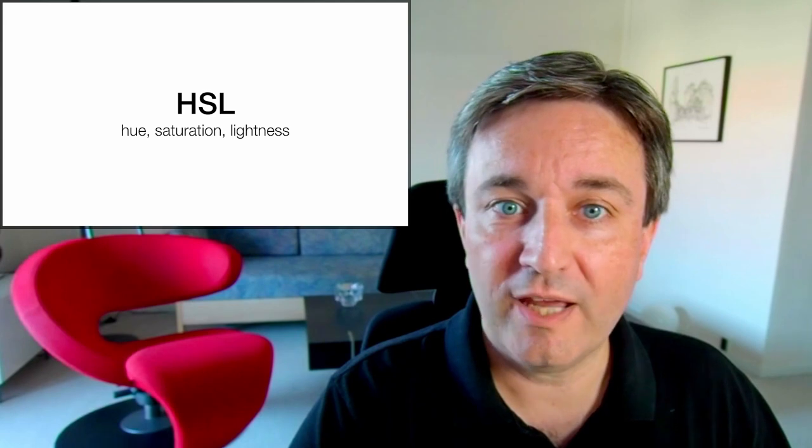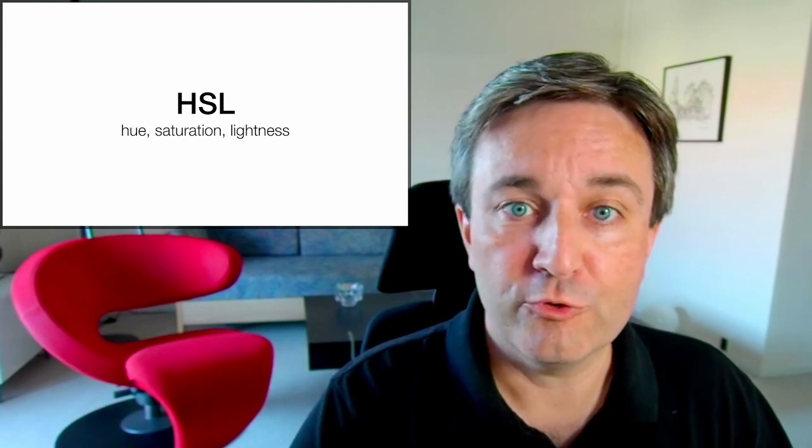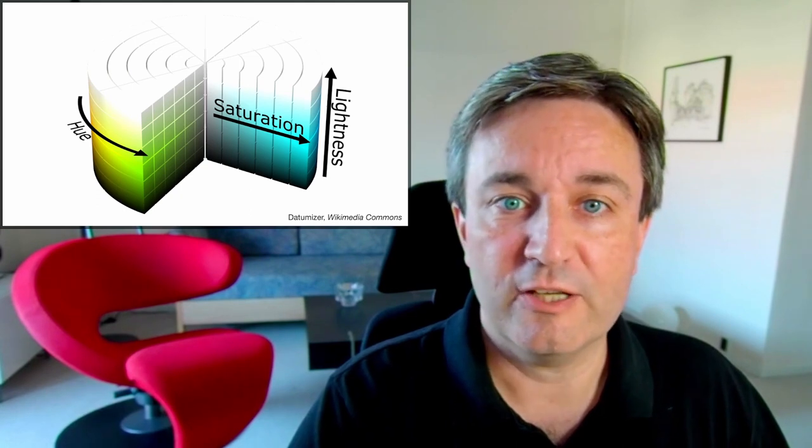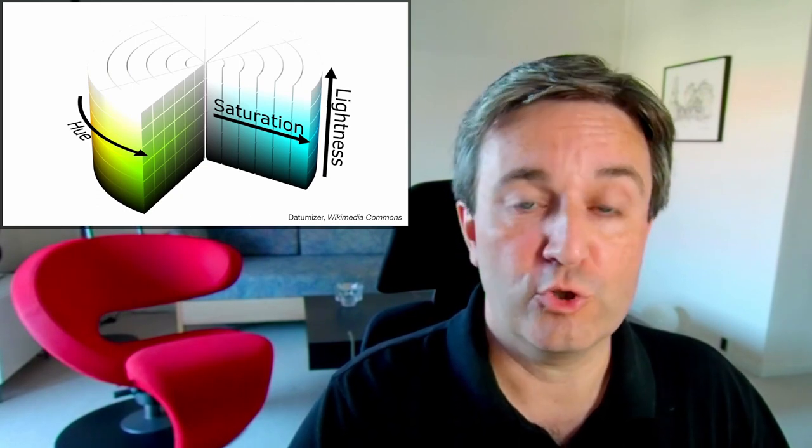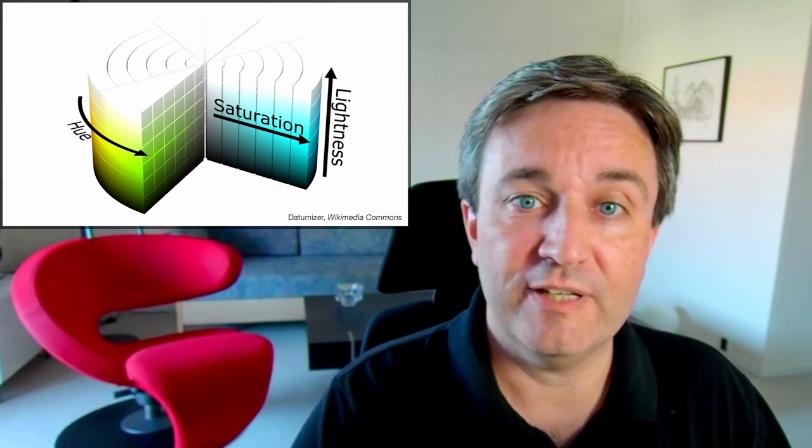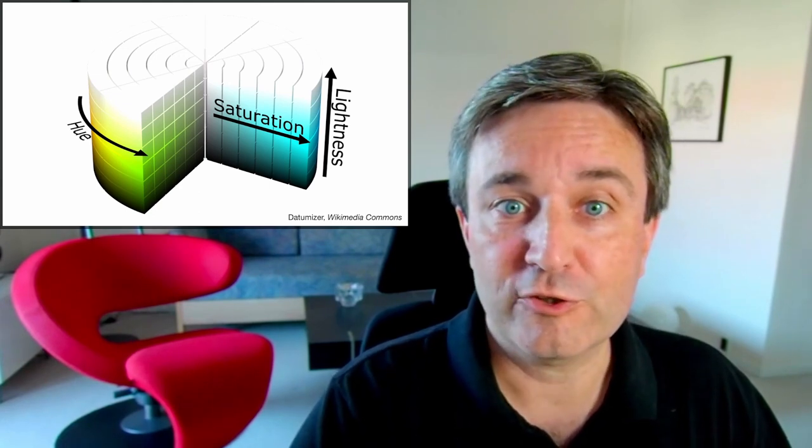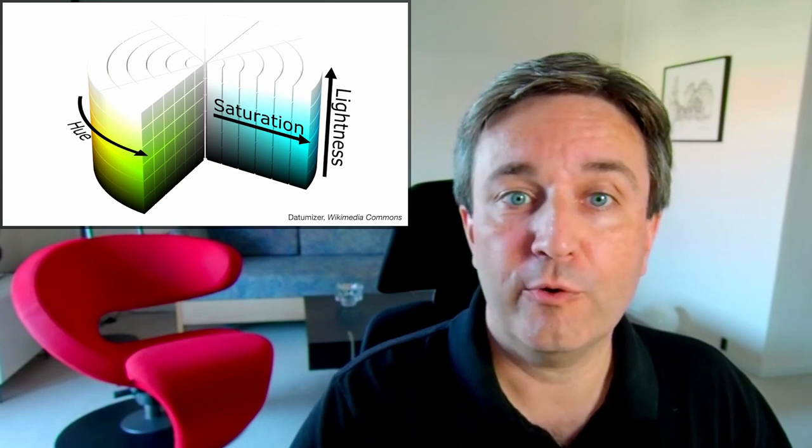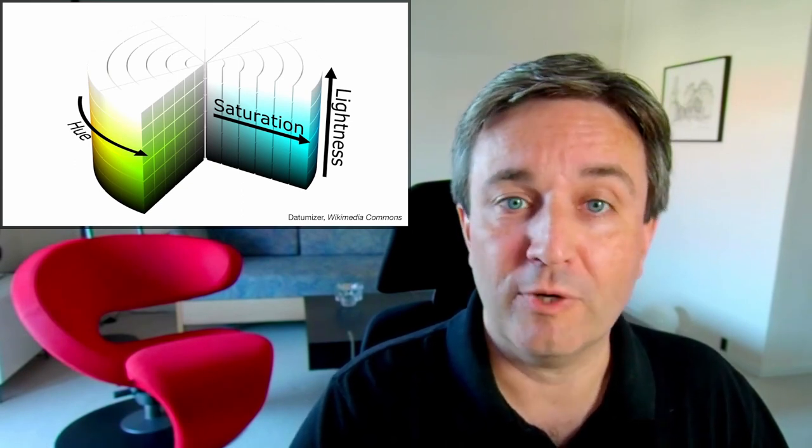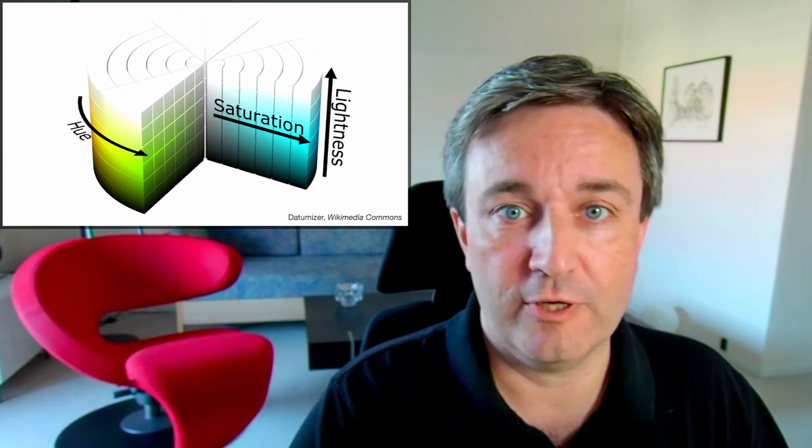For this reason, we have HSL: hue, saturation, lightness. Again, the colors are in a cylinder, but now you see the whole top layer is white, the bottom layer is black, and you have a lightness axis. The strong colors, the clean hues, are going around the center at 50% lightness, and you have saturation going from gray to these colors.